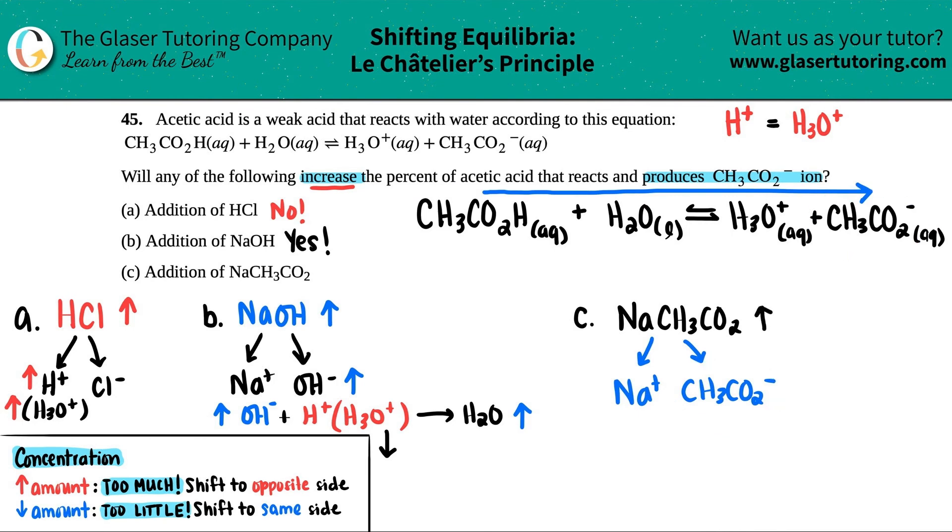If I'm adding sodium acetate, I have way more CH3CO2-, so this will increase. Applying Le Chatelier's principle: if you're increasing something, you have too much and need to get rid of it, so you shift to the opposite side. I have too much on the product side, so I need to go toward the reactants. The arrows don't match. So would the addition of sodium acetate increase the percentage? No.